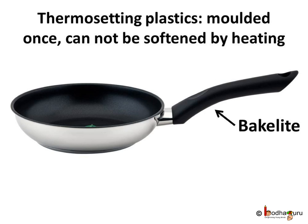On the other hand, there are some plastics which when moulded once cannot be softened by heating. These are called thermosetting plastics. For example, bakelite. Cookware handles are made of bakelite, so these handles don't get soft when heated.